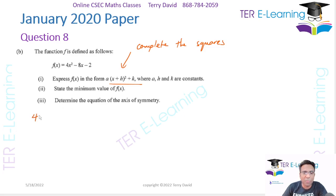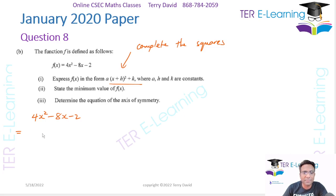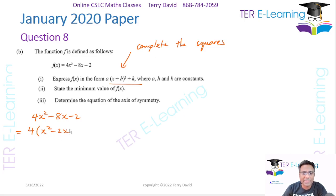So I'm going to start off with 4x² − 8x − 2. What we can do at the start is factor out 4. So this will be 4(x² − 2x) − 2.